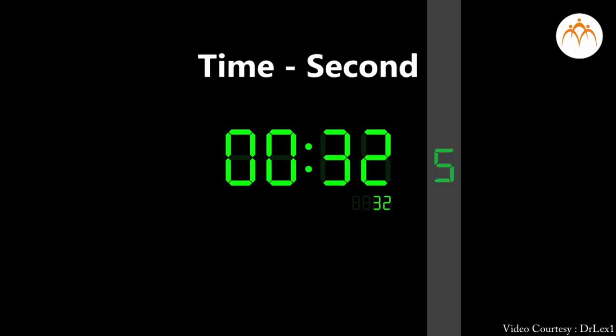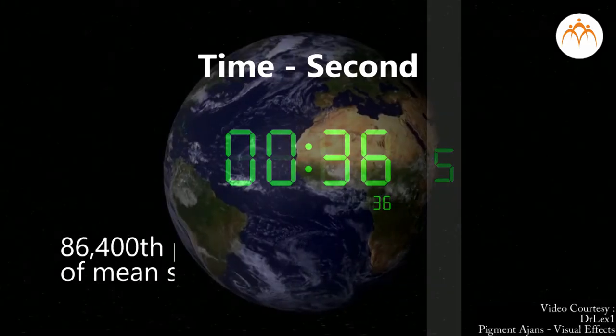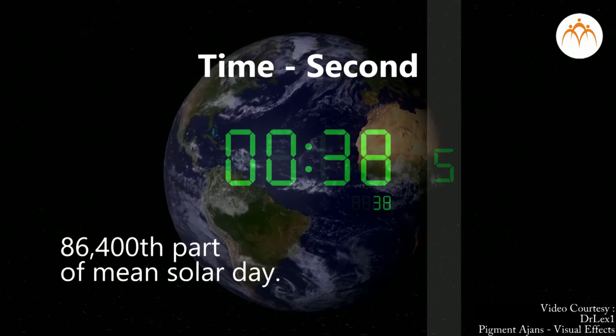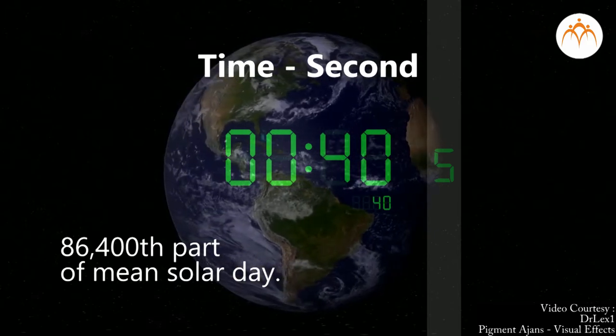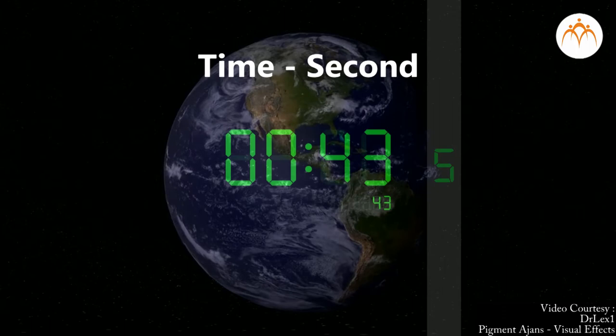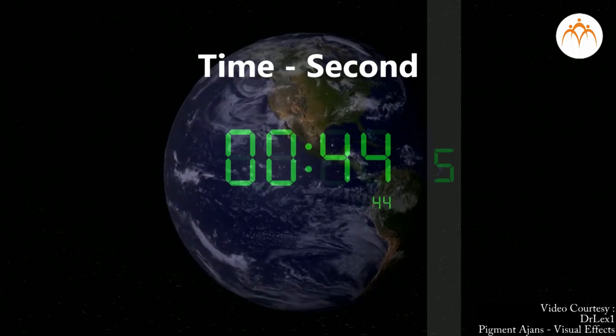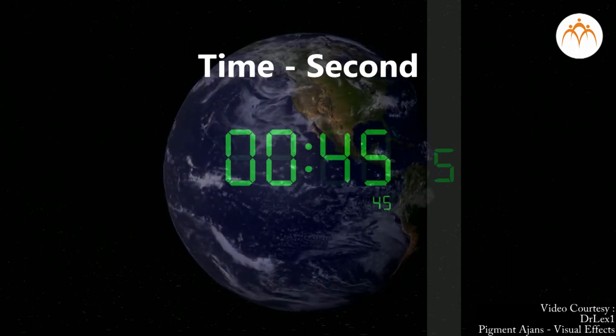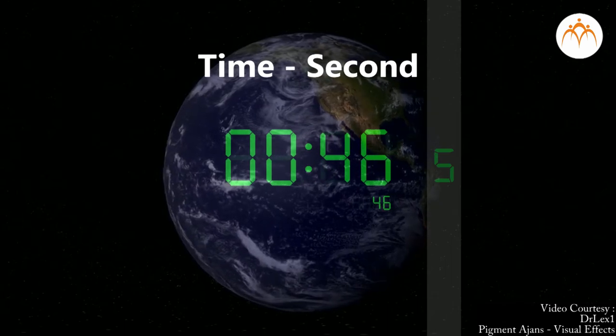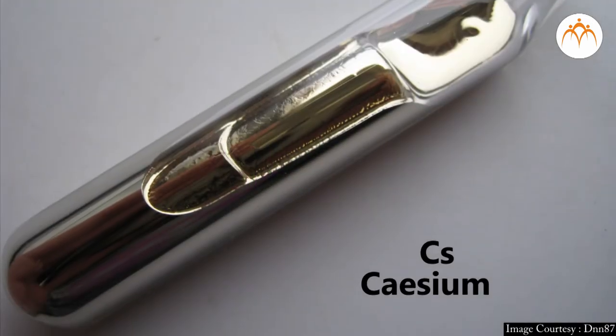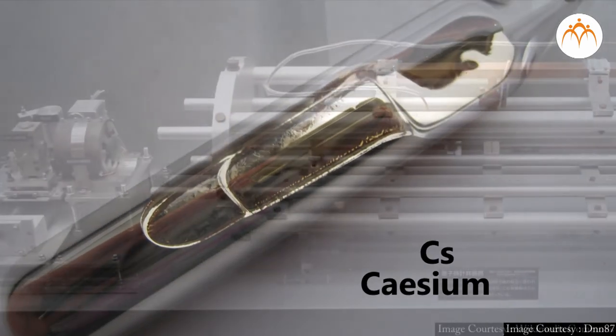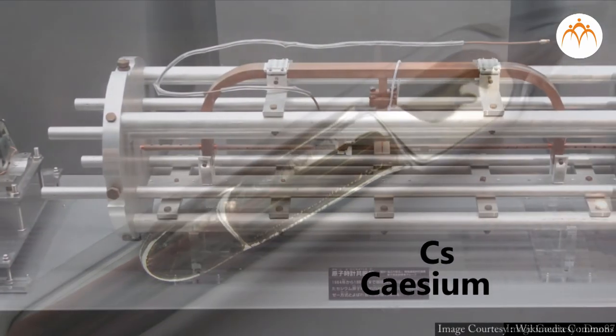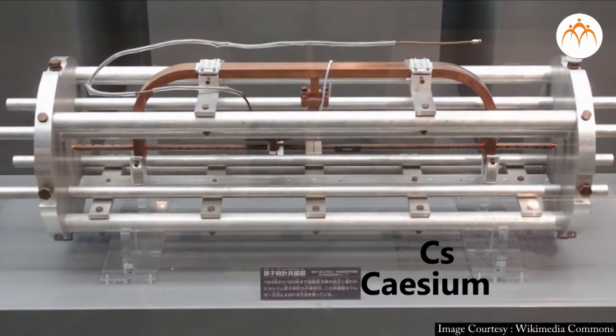SI unit for the time is second, abbreviated as S. For a long time, it was measured as 86,400th part of mean solar day. But scientists found out that this was getting longer due to gradual slowing down of Earth's rotation. As a result, scientists shifted to another method. Cesium atoms can be made to vibrate in a very steady way and these vibrations can be readily observed and counted.